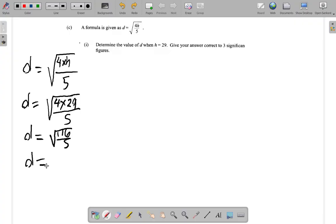So you have the square root of 116 over 5. On further calculation, 116 over 5, what do you get? 23.2. So you have the square root of 23.2.